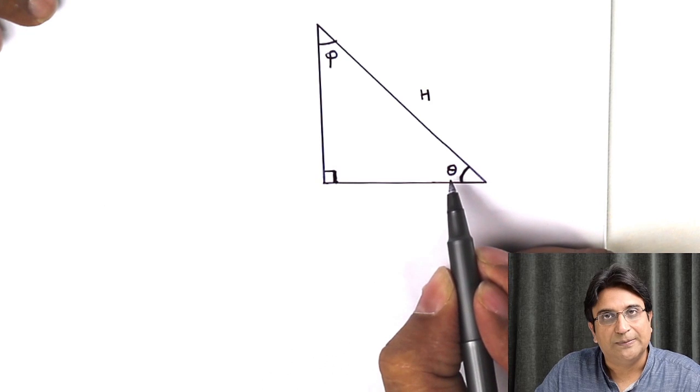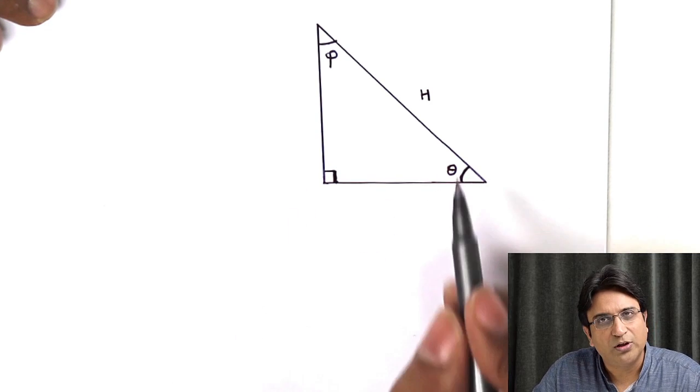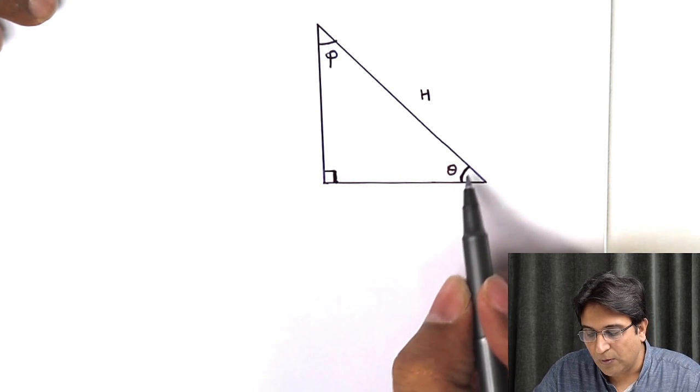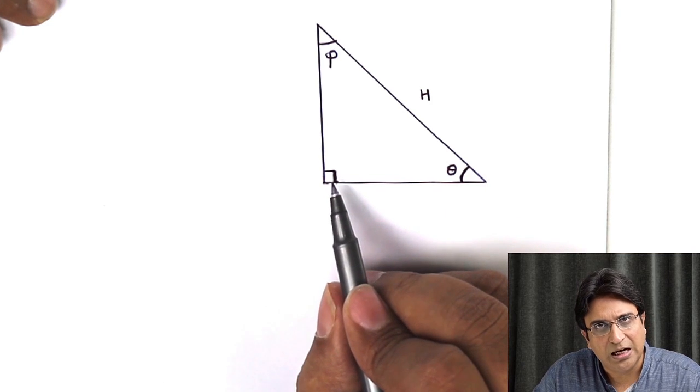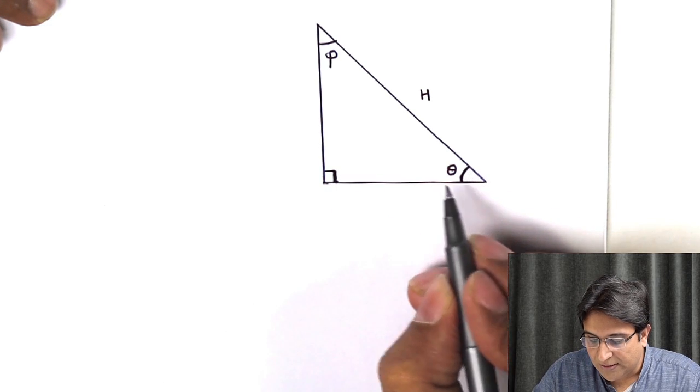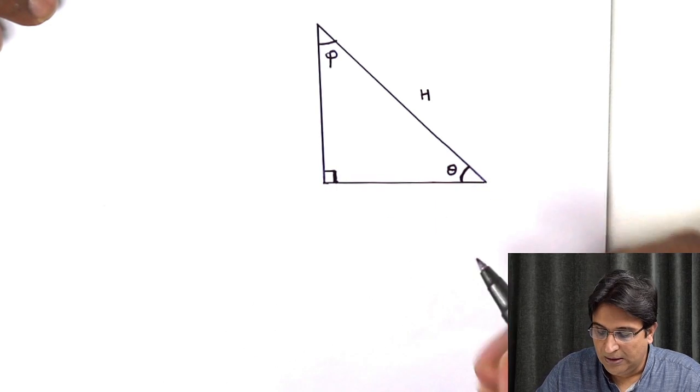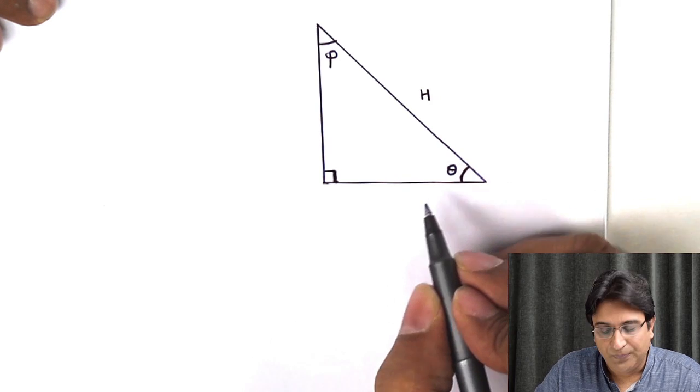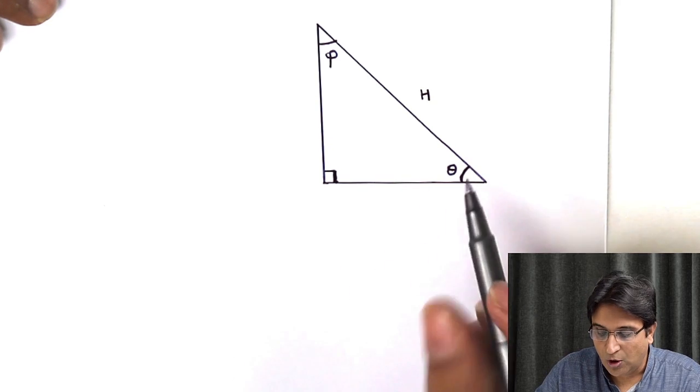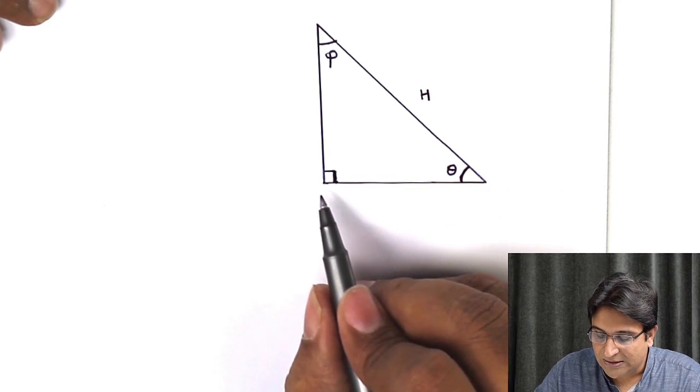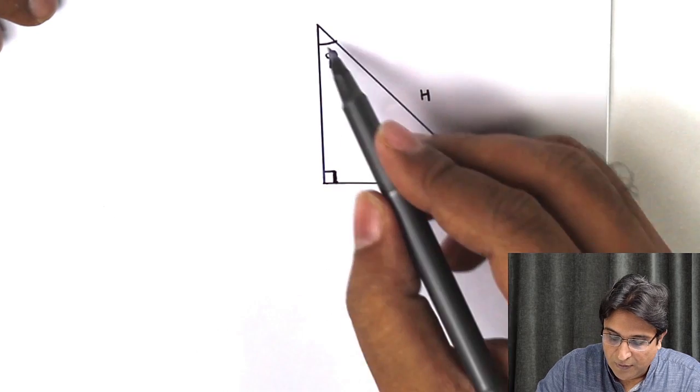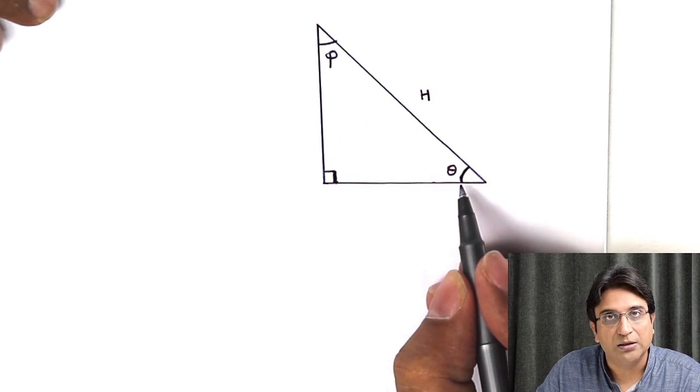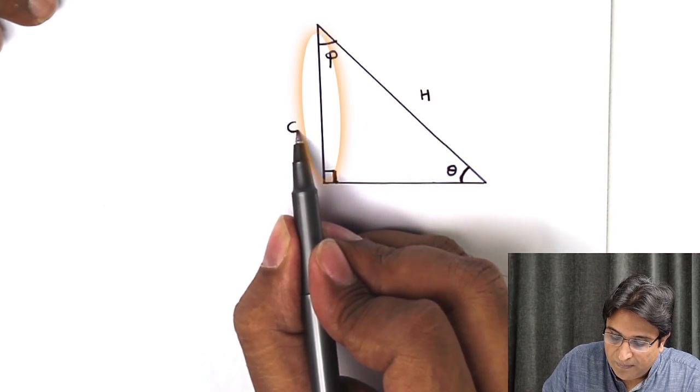Now, let's say we choose theta. Whenever we are naming the different sides of a right angle triangle, it's important to choose one angle other than the 90 degree angle. So, let's say we choose this angle and it is theta. Now, the side opposite it is known as opposite. So, how do we find the side opposite it? Just like I said, ignore the arms which are making up this angle. So, this side is the opposite.